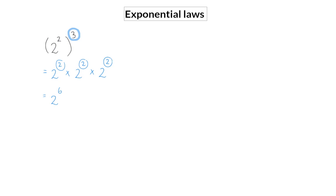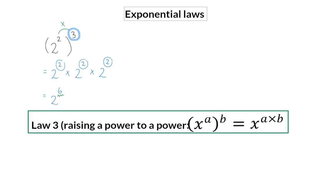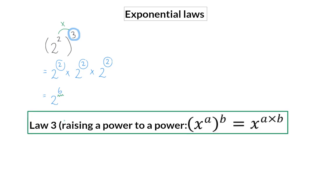Can you see that the exponent of 6 can also be formed by multiplying the two original exponents? 2 times 3 is 6. And so, from here, we form the third exponential law. This law states that when we have one base number that is raised to two powers, we can simply multiply those exponents.